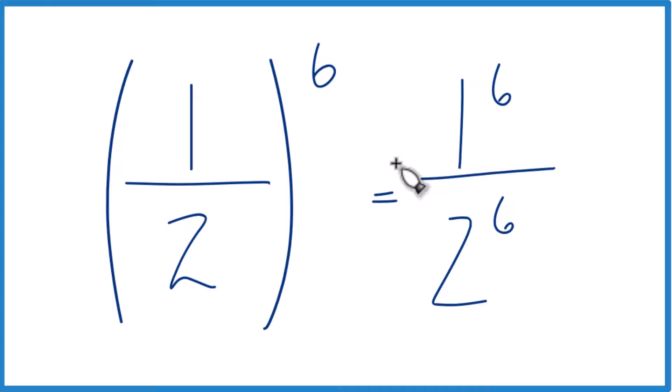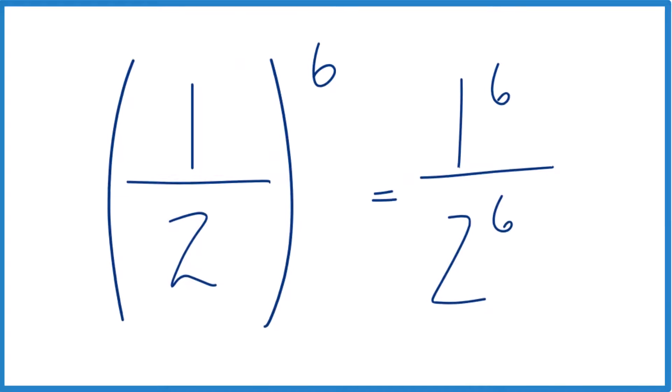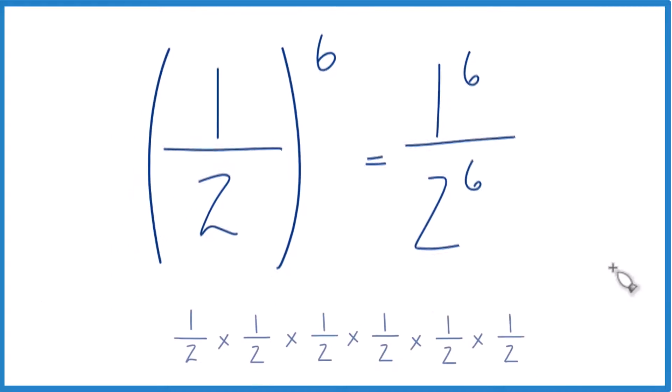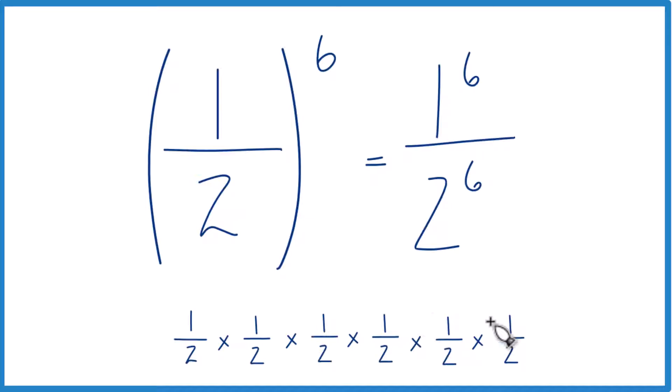Really we're just taking one-half and multiplying it six times — one, two, three, four, five, six times. That's one to the sixth.